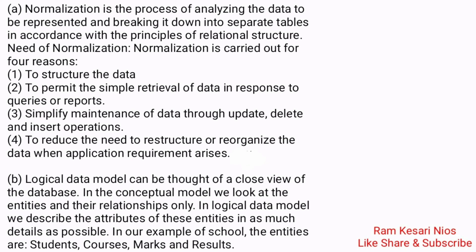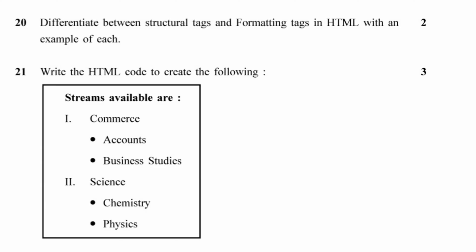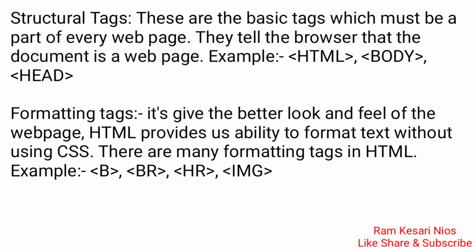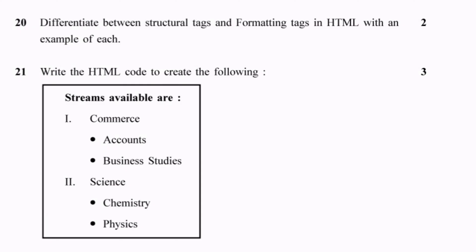Question 19b: Define logical data model with an example. A logical data model can be thought of as a close view of the database. In the conceptual model we look at entities and relationships only, but in the logical data model we describe the attributes of these entities in as much detail as possible. For example, in a school database the entities are students, courses, marks, and results. Question 20: Differentiate between structural tags and formatting tags in HTML with an example of each. Structural tags are the basic tags which must be part of every web page; they tell the browser that the document is a web page — example: html, body, head. Formatting tags give the web page a better look and feel; HTML provides the ability to format text without using CSS — examples: b, br, hr, img.